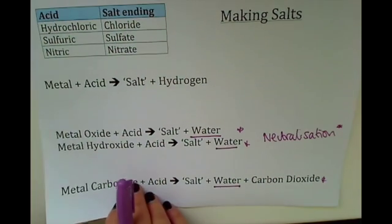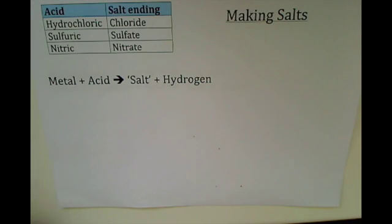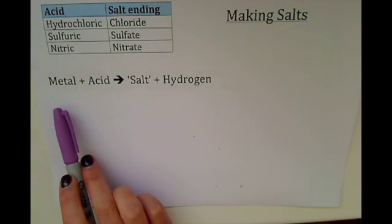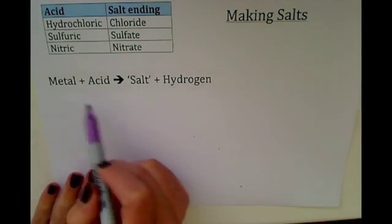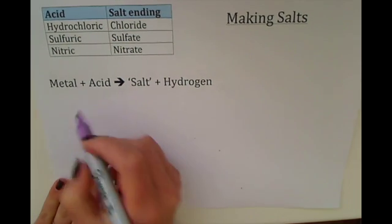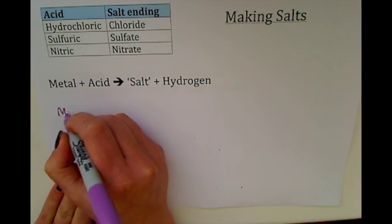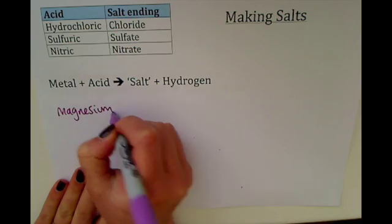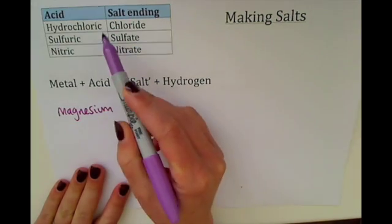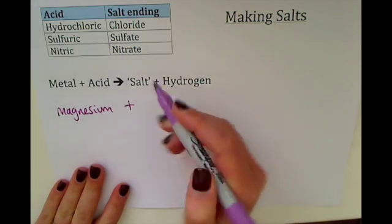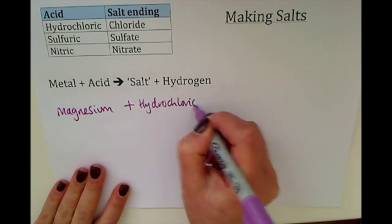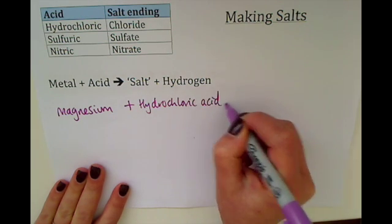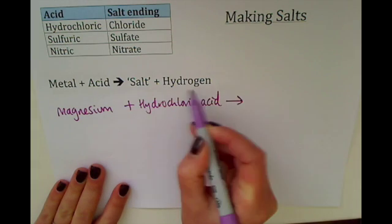To look at some examples, the general equation is: metal plus acid makes a salt plus hydrogen. If we substitute a metal and an acid, we could have magnesium for the metal reacting with — we could choose any one of these three acids — I'm just going to choose hydrochloric, and we make our salt plus hydrogen.